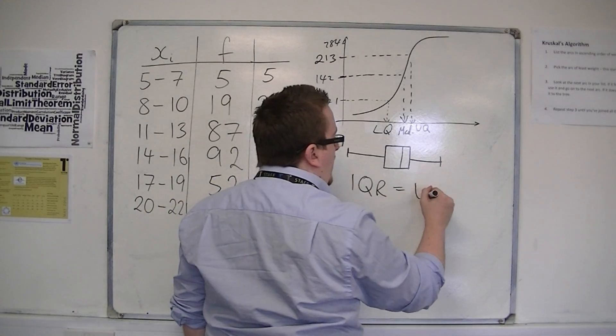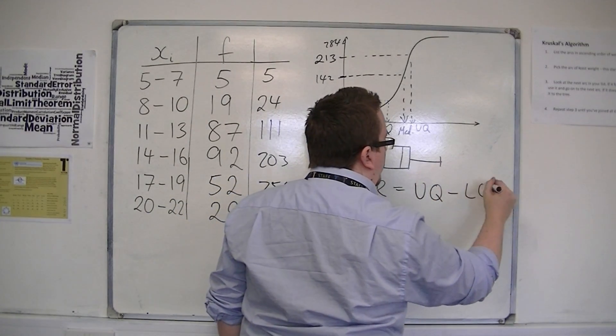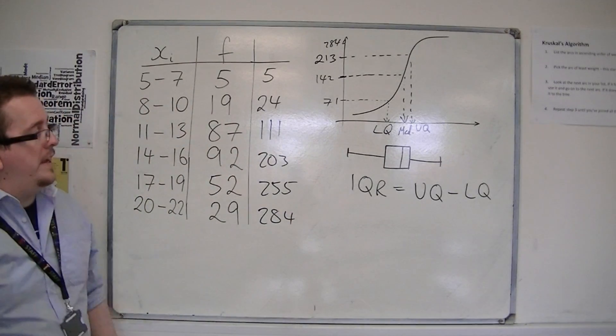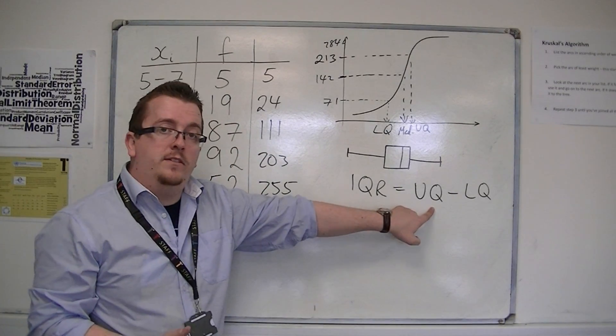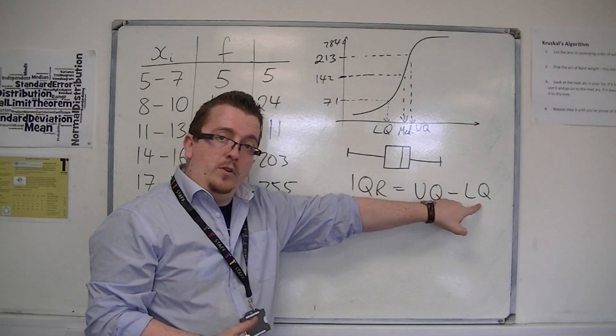Because the interquartile range, or abbreviated to the IQR, is the upper quartile take away the lower quartile. So the 75th percent point take away the 25th percent point.